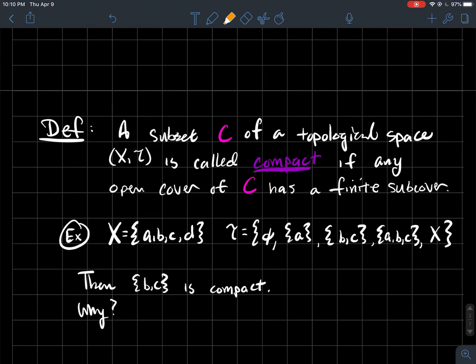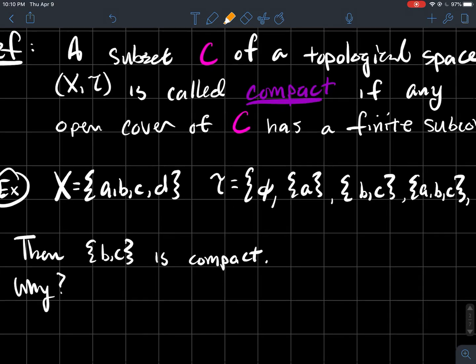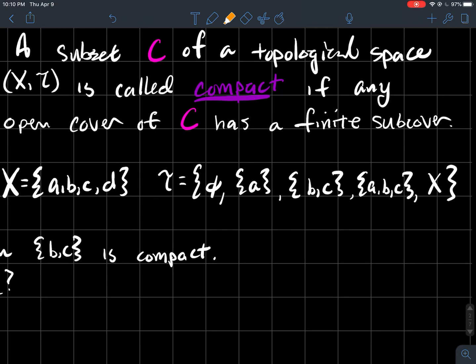Let's take a look at an example. Let's pick this set A, B, C, D, and let's say its topology is this one over here. So empty, just A itself, B, C, A, B, C, and X. So I have one, two, three, four, five things in that topology.